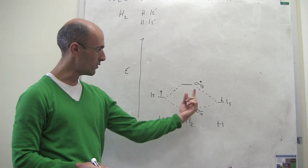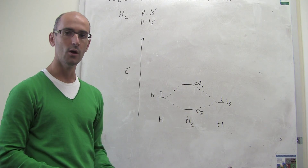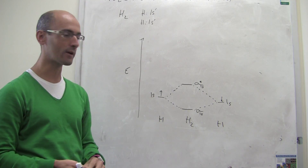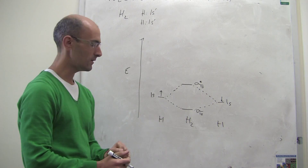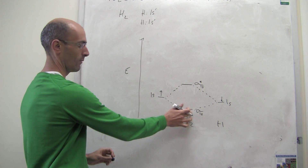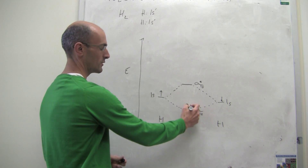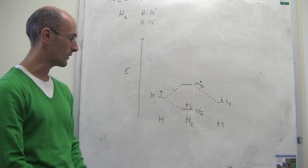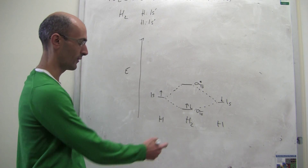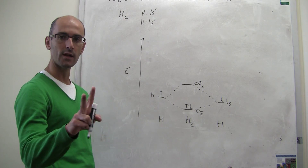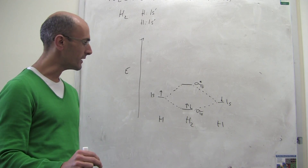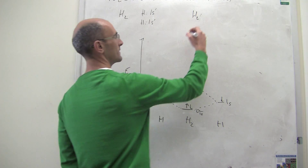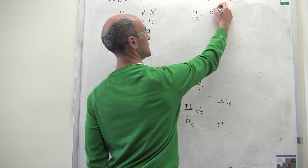Now that we know the orbital structure for H2, we can fill those orbitals with electrons. We have a total of two electrons, and they both go into the sigma-1s bonding molecular orbital. This is the molecular orbital diagram for H2. The electronic configuration of H2 is written as sigma-1s².